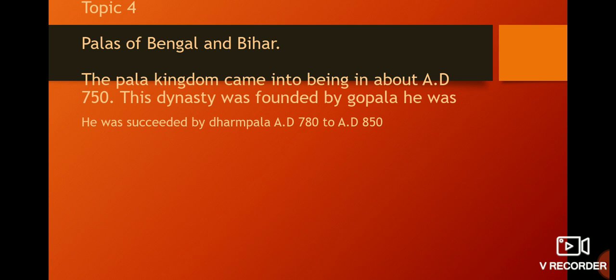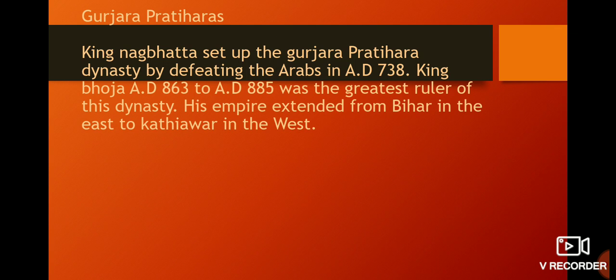The Gurjara-Pratihara dynasty was established by King Nagabhata, who defeated the Arabs in AD 738. King Bhoj, who ruled from AD 836 to AD 885, was the greatest ruler of this dynasty.